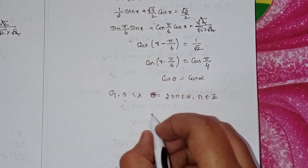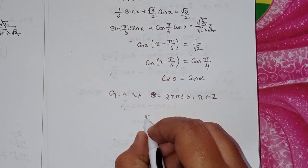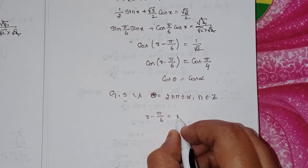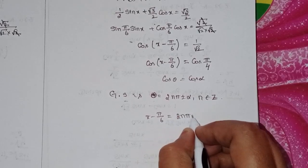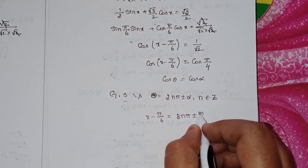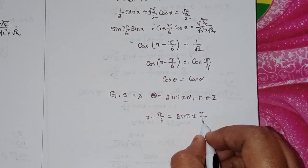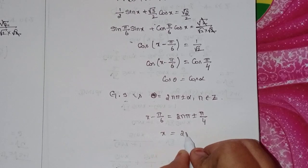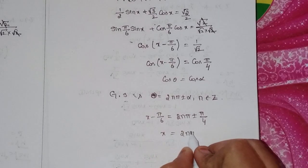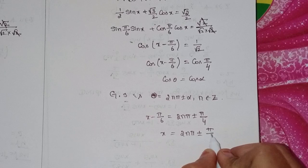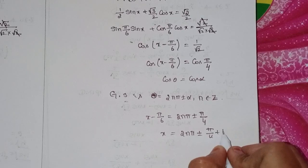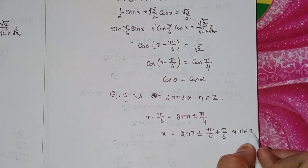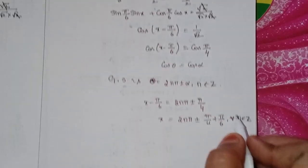So x − π/6 = 2nπ ± π/4, giving x = 2nπ ± π/4 + π/6 for all n ∈ ℤ.